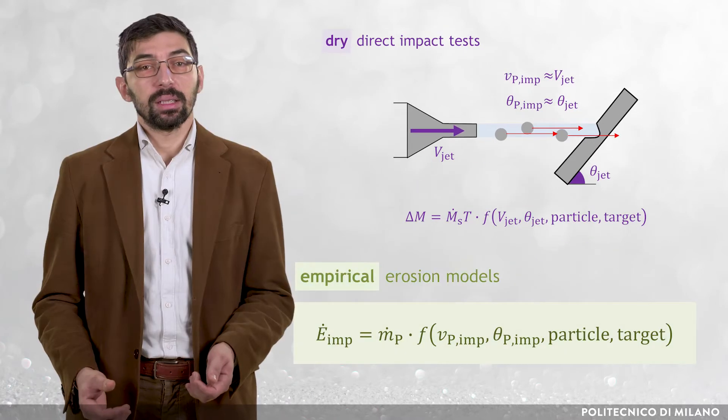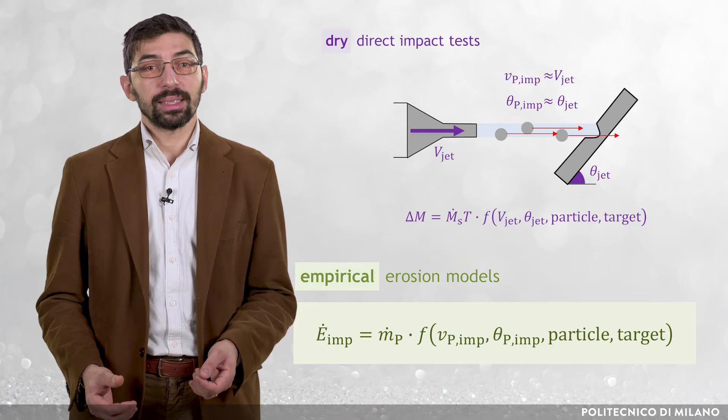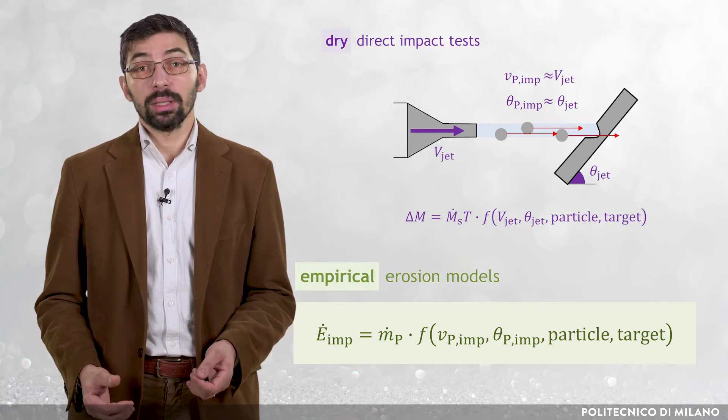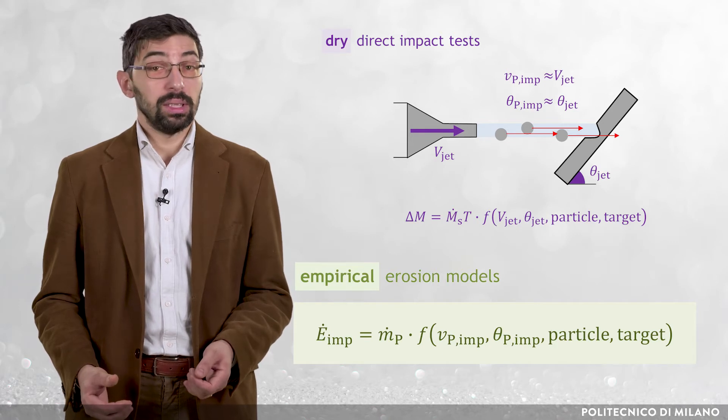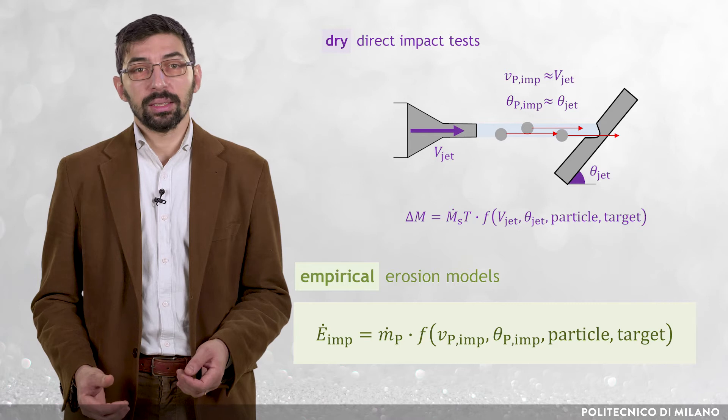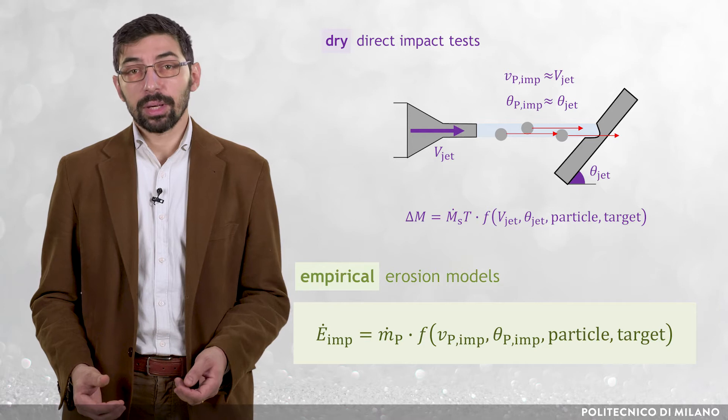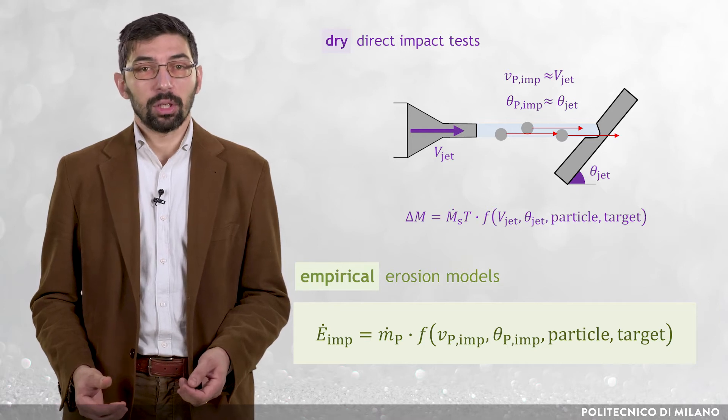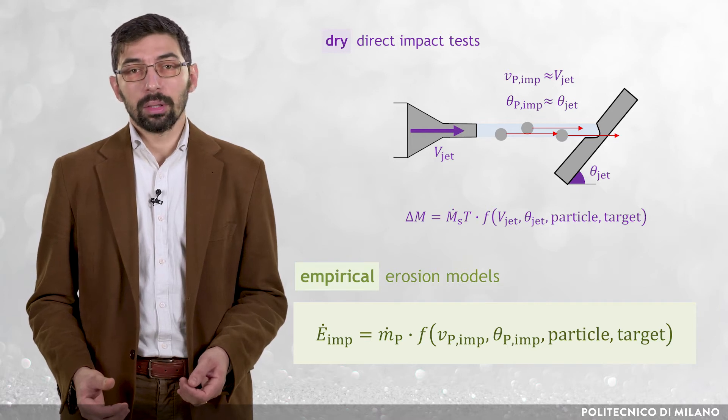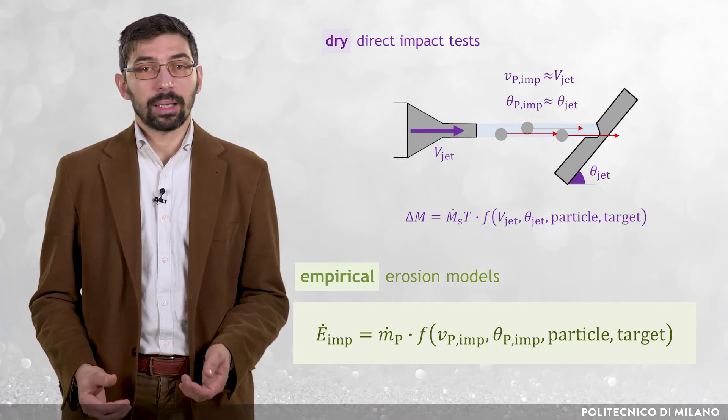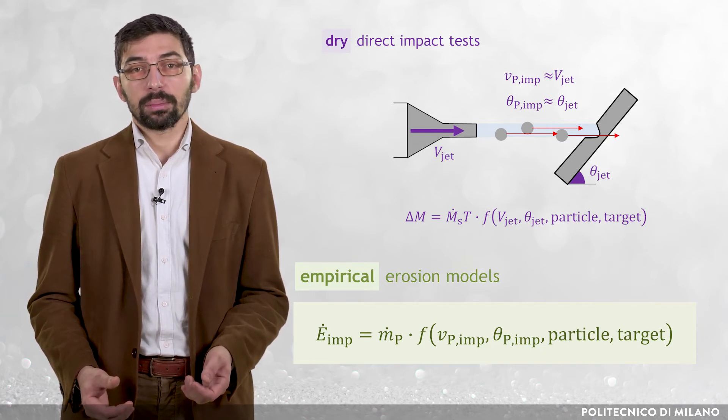The idea at the basis of empirical erosion models is to apply the same functional relationship at the local scale of parcel-wall impacts. This yields mass flow rate of removed material, dot e-imp, equal to the mass flow rate associated with the parcel trajectory, dot m capital P, times the same function f of the parcel velocity at the impact stage, v capital P-imp, the inclination angle of the trajectory at the impact stage, theta capital P-imp, the properties of the particle, and the properties of the target material.